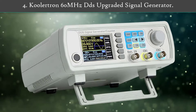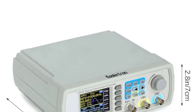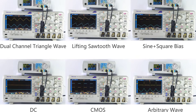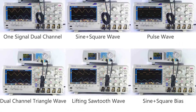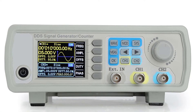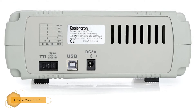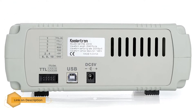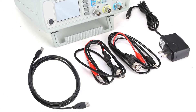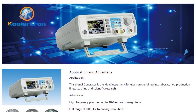Number 4: Coolatron 60MHz DDS Upgraded Signal Generator. It is considered one of the best waveform generators for the upgraded features it has. It has more advantages than other devices because of its easy handling nature. The front panel of the device contains a digital display, tuners, channel 1/channel 2 ports, amplitude frequency switches, and a power button. All these key features make the device more special and attract customers.